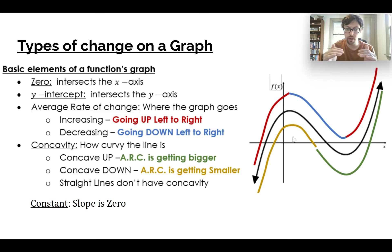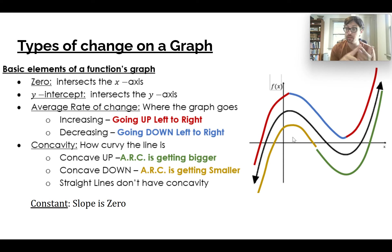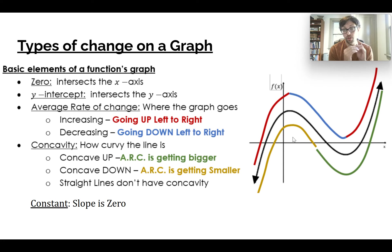It doesn't appear anywhere on this graph, but if we ever have horizontal lines it will be a constant slope — the graph is neither increasing nor decreasing, concave up or concave down. We are just constant.